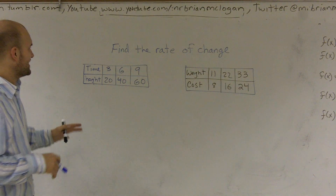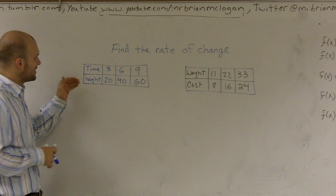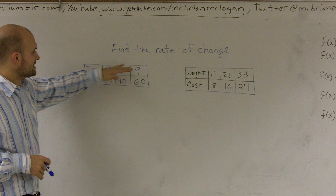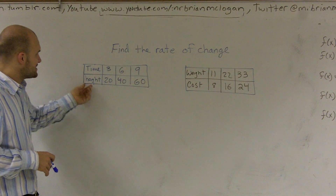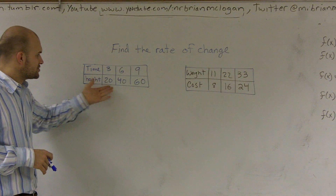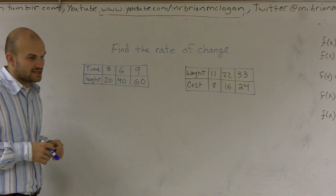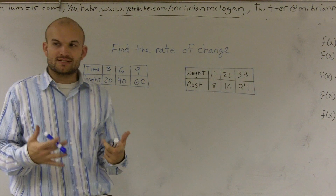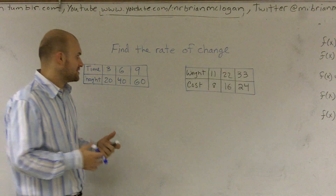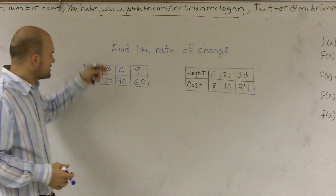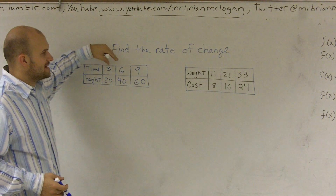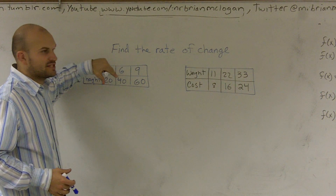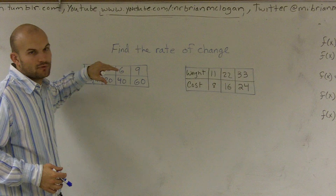Here we have a quantity of time, so time goes 3, 6, 9, as the height changes at 20, 40, 60. So what I want to do is find what is going to be the rate of change between this — what is the change in my top quantity compared to the change in my bottom quantity?